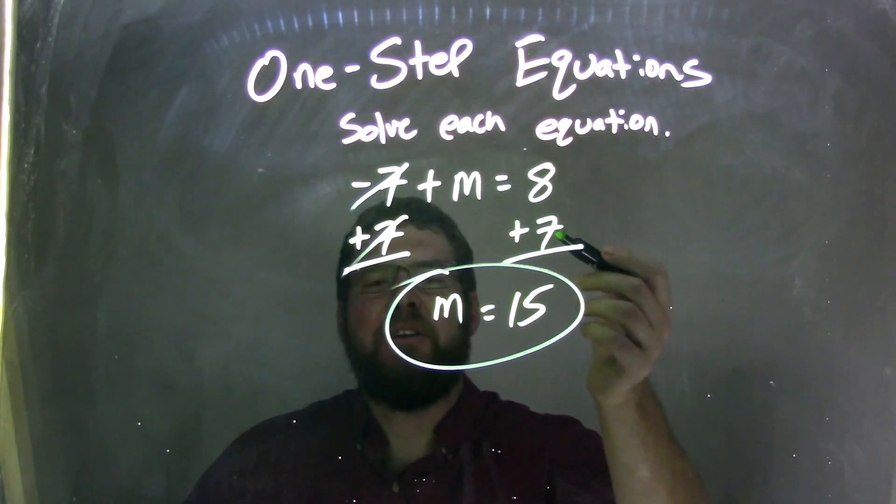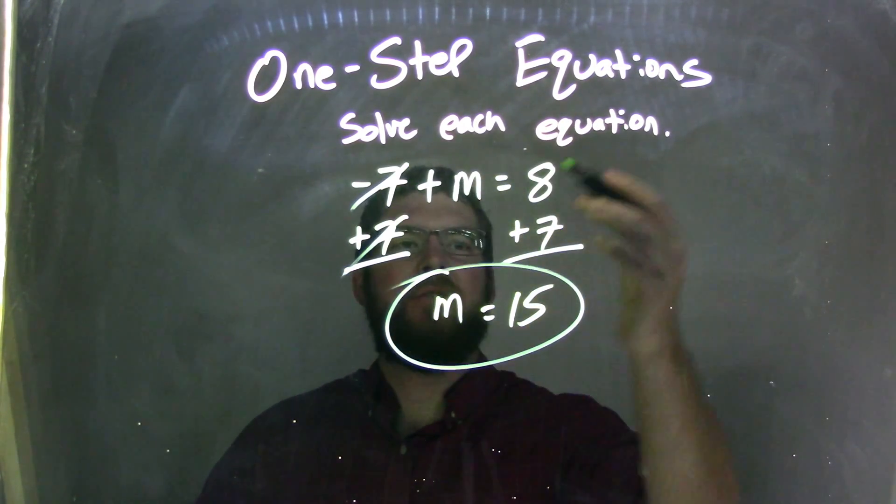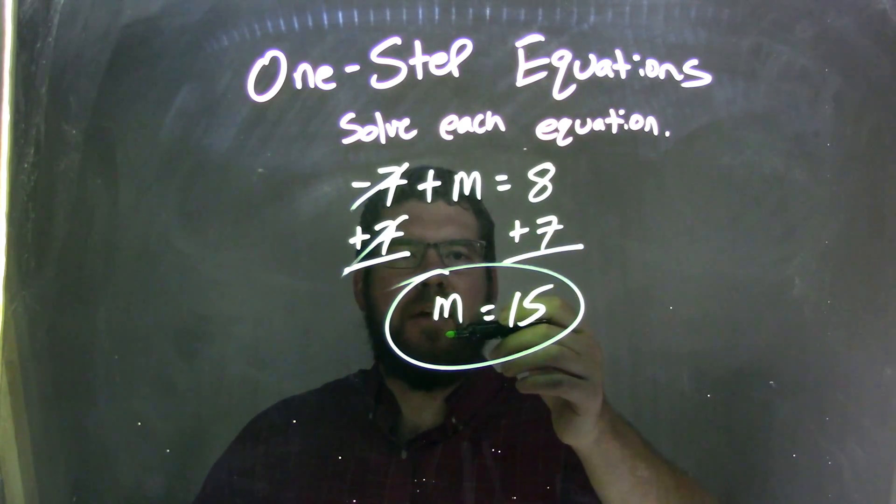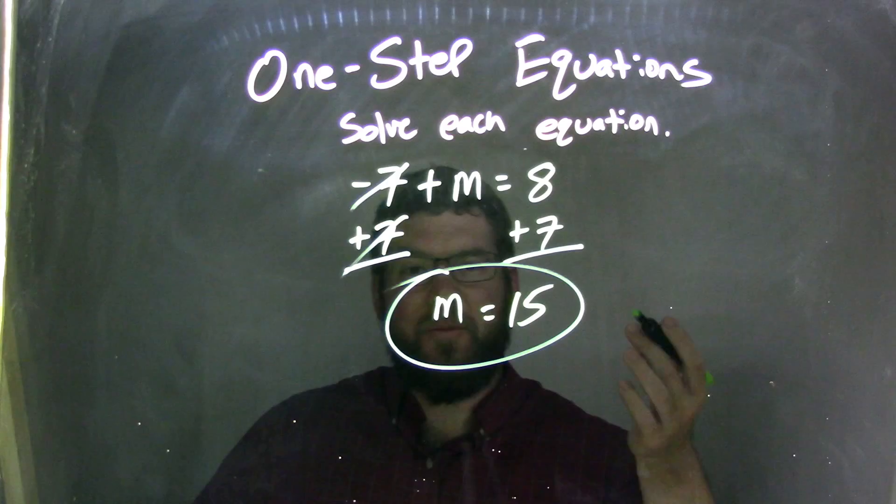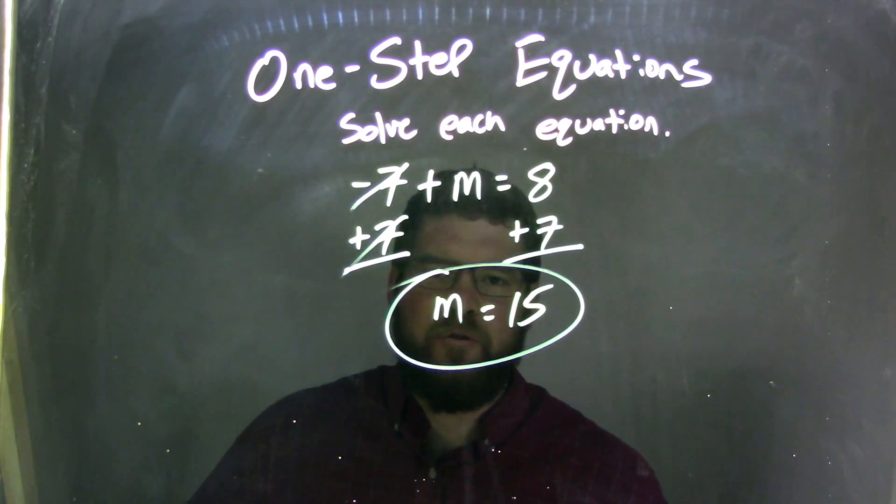So by adding a 7 to both sides here, I cancel out that 7 on the left, and I'm left with m on the left. That equals 8 plus 7. 8 plus 7 is 15, so my final answer is m equals 15.